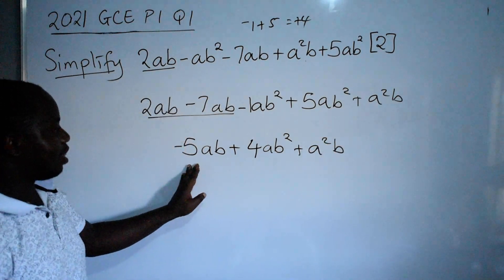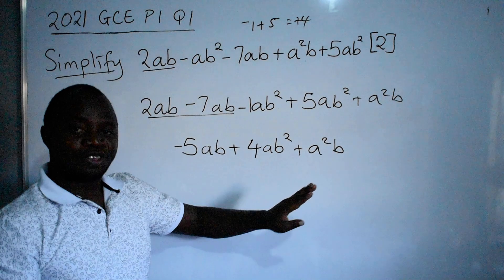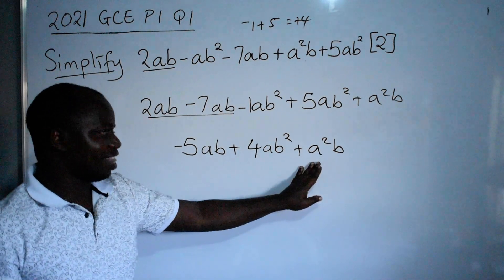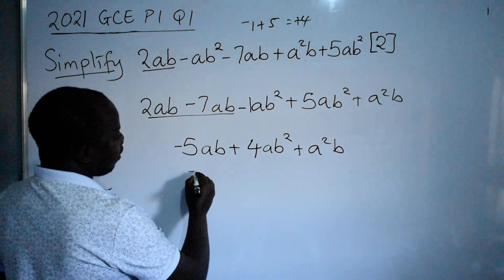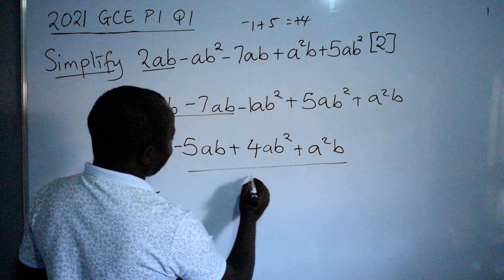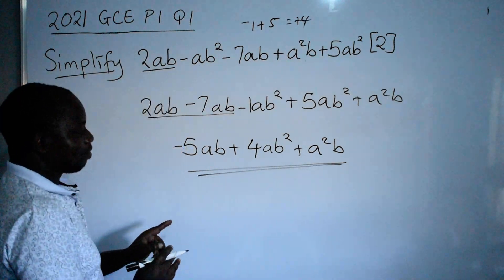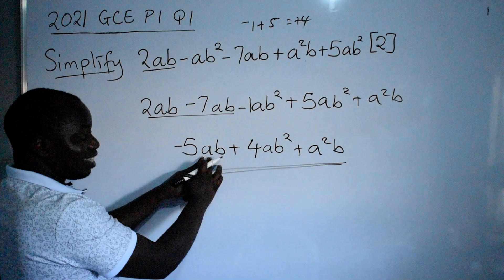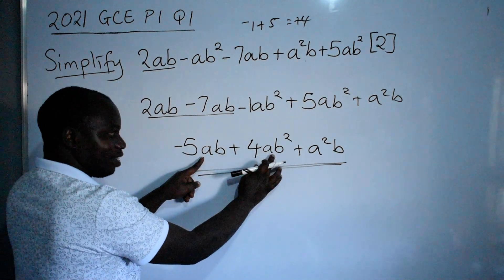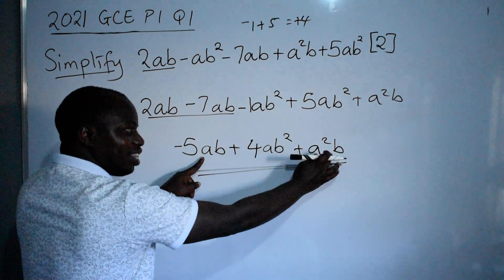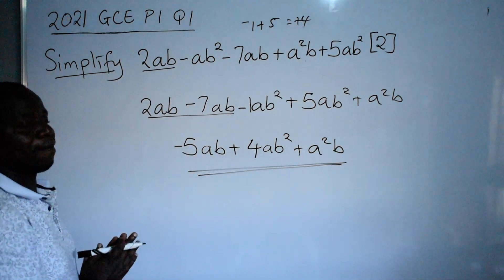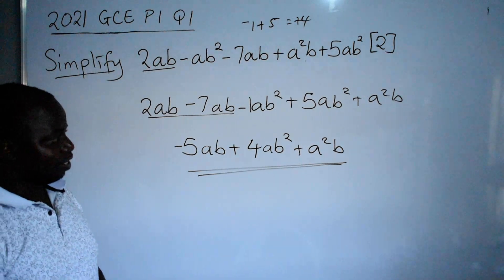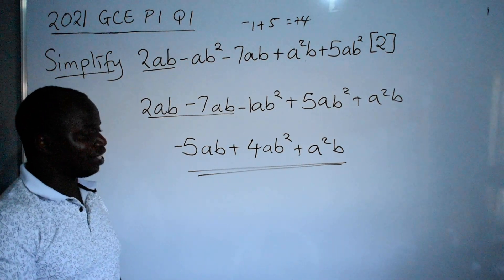At the end here we have plus a squared b. At this stage you cannot do anything further. Therefore this is your final answer. Please take note that this is not the same as this — they are all different. So this is your final answer: negative 5ab plus 4ab squared plus a squared b.